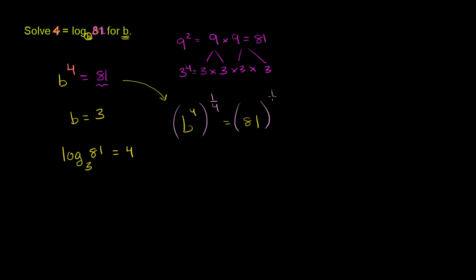You could raise both of these to the 1 fourth power. Anything you do to one side of the equation, you have to do to the other. And from our exponent properties, you know that if you raise something to a power, then raise that to a power, that's like raising it to the 4 times 1 fourth power, or essentially just raising it to the first power. So on the left-hand side, you're just left with b. And on the right-hand side, you're left with 81 to the 1 fourth power.